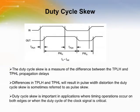The skew introduced by logic devices can be divided into three parts: duty cycle skew, output to output skew, and part to part skew. Depending on the specific application, each of the three components can be of equal or overriding importance. The duty cycle skew is a measure of the difference between the T sub PLH and T sub PHL propagation delays. Duty cycle skew is important in applications where timing operations occur on both edges or when the duty cycle of the clock signal is critical.